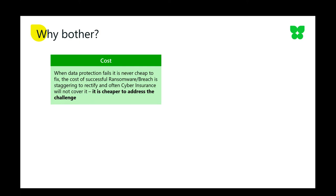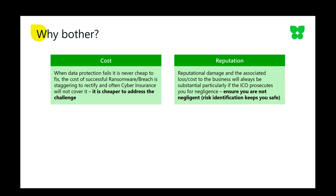So why bother? Well, cost. When data protection fails, it is never, ever cheap to fix. The cost of a successful ransomware breach can be quite staggering and difficult to rectify, often going on for a very extended period of time, and in many cases cyber insurance will not cover it. It is almost always cheaper to address the challenge up front. Reputational damage is also significant — think of examples like British Airways and TalkTalk. That reputational damage stays for a long time, puts the business under scrutiny, and can be substantial, particularly if the ICO decides to prosecute for negligence.